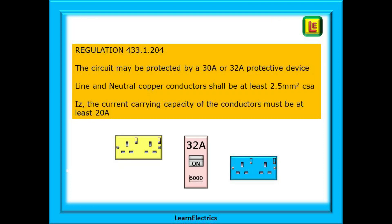If we were to look at regulation 433.1.204 we would read that a ring circuit may be protected by a 30 amp or 32 amp protective device. That the line and neutral copper conductors shall be at least 2.5 millimeters cross sectional area and the current carrying capacity IZ of the conductors must be at least 20 amps.